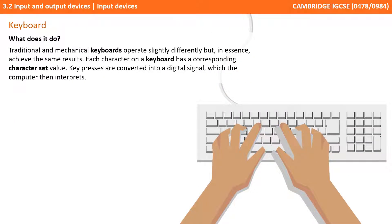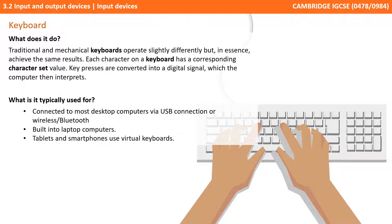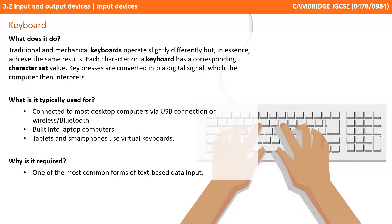Our next input device is the keyboard. Traditional and mechanical keyboards operate slightly differently, but in essence they all achieve the same results. Each character on a keyboard has a corresponding character set value, and key presses are converted into a digital signal which the computer then interprets. Keyboards are connected to most desktop computers via USB or wirelessly via Bluetooth, are built into laptops, and tablets and smartphones often make use of virtual keyboards. They're one of the most common forms of text-based data input.